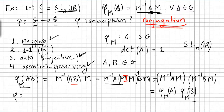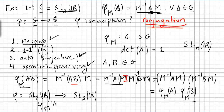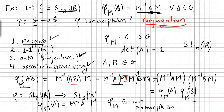So taking phi from SL2(R) to SL2(R) through conjugation — where conjugation is defined as phi of M of A equals M-inverse A M — we can say that phi of M, the conjugation map, is an isomorphism.